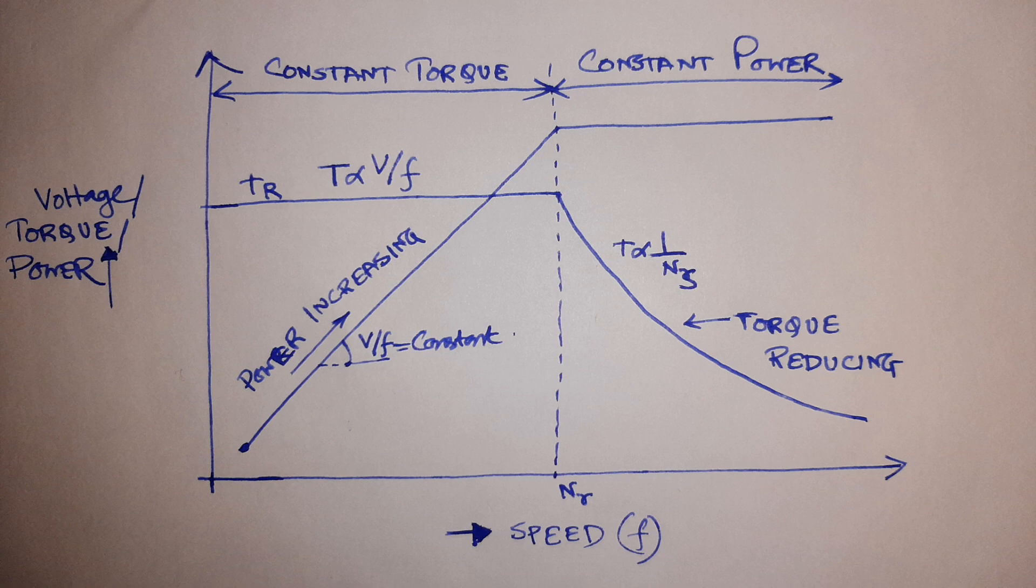occurs within the rated speed, that is zero to Nr. We start the motor from speed zero up to its rated speed so that we can take the constant maximum rated torque while the power is taken at a reduced amount.